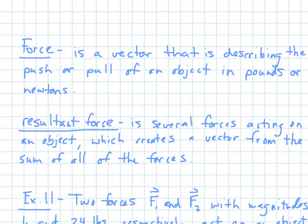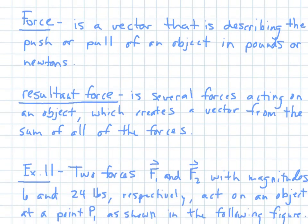Now, this next part, let's talk a little bit about force. So force is a vector that is describing the push or pull of an object in pounds or newtons. Two different ways of describing it or measuring it. Now, a resultant force is several forces acting on an object, which creates a vector from the sum of all the forces.